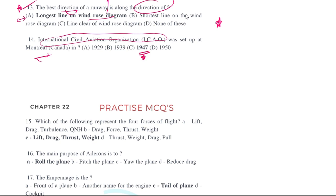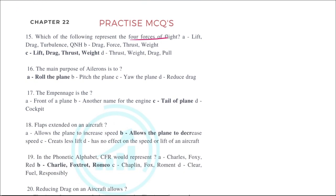The four forces of flight are lift, which acts upwards; gravity or weight, which acts downwards; drag, which acts backwards; and thrust. These are the four forces of flight.